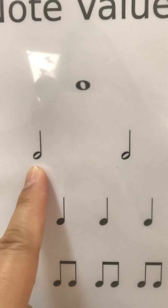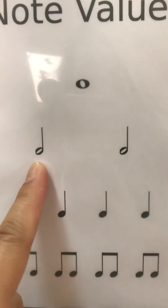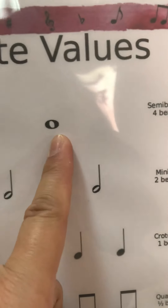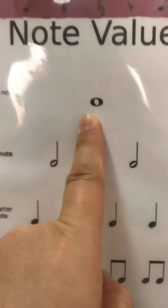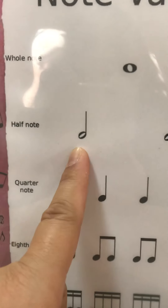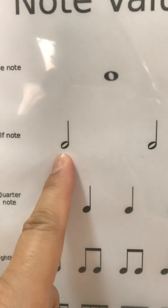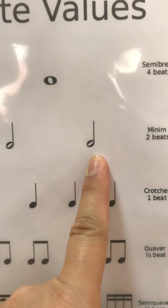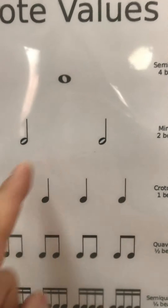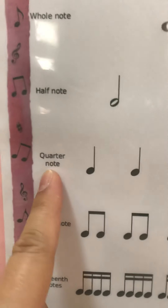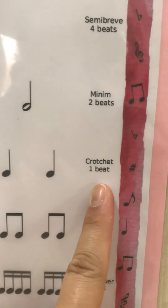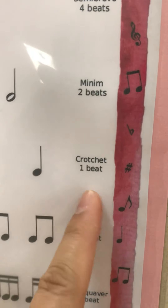Now what about the half note? The half note is also called minim in British term. We have two minims or two half notes to make a whole note. So how to count for this: one, two, three, four — or one, two, one, two. Now next is the quarter note, also called crotchet.